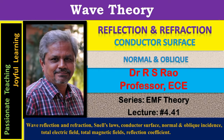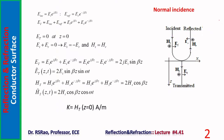This is lecture number 4.41 in the series on electromagnetic field theory, covering reflection and refraction from a conductor surface for both normal and oblique incidences. Electromagnetic waves obey Snell's laws and undergo reflection and refraction when moving from one medium to another. The present session focuses on plane wave incidence on the plane surface of a perfect conductor, considering both normal and oblique incidences.